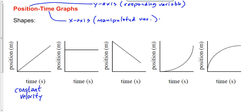What about the second graph? Look at the graph — the line is at a certain position and stays at that same position as time goes by. If it's the same position as time goes by, then the object is not moving. It's stopped. When you have a quiz on these graphs and I ask what that means, you say 'not moving' or 'stopped' — I don't care what you say as long as it means the same thing.